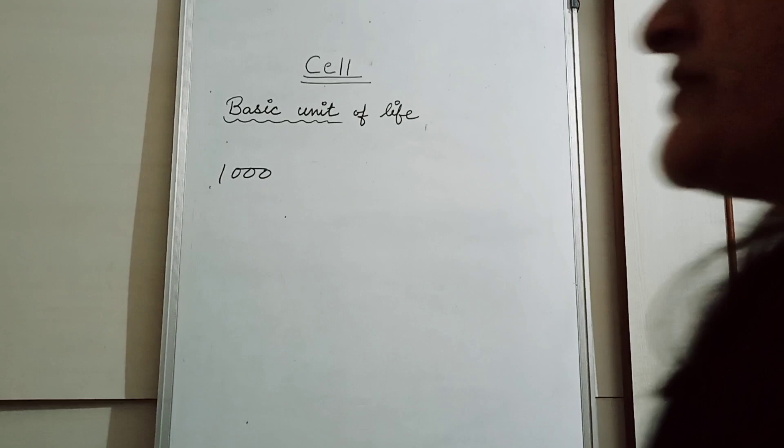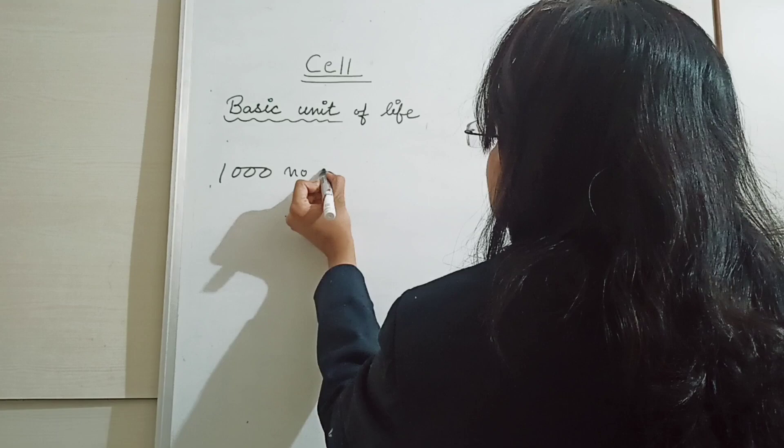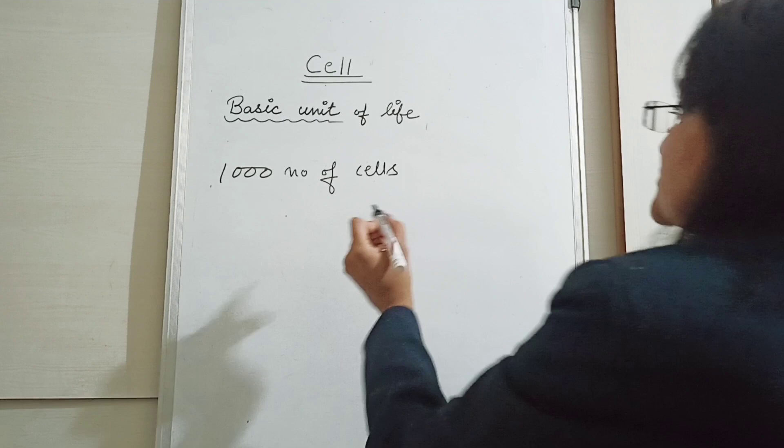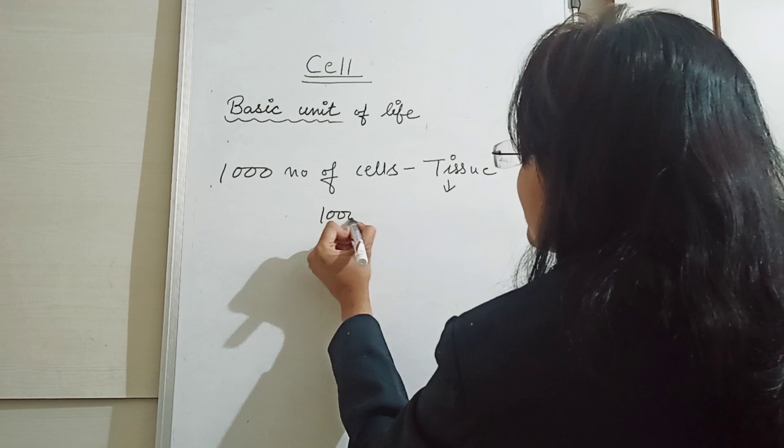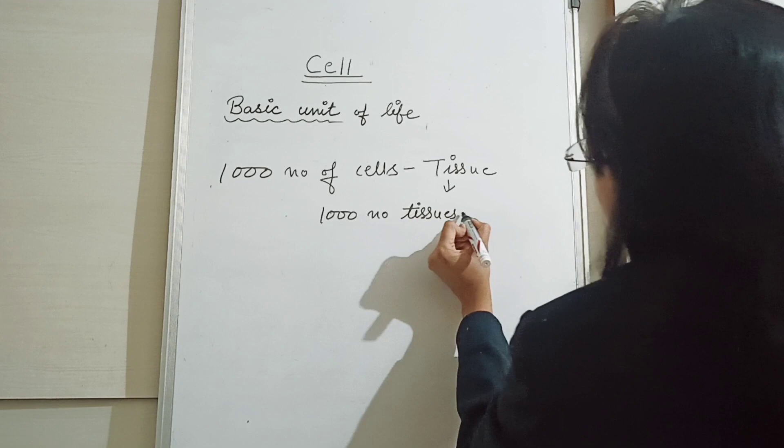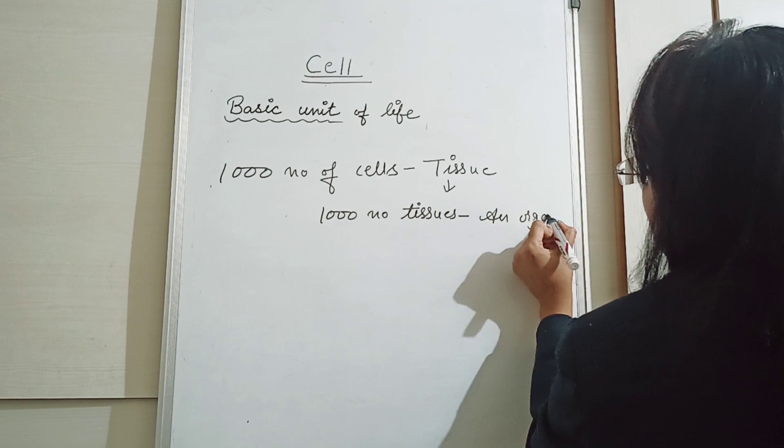Same as in our body also. Thousands of cells combine to form a special structure that is known as tissue. Then, thousands of tissues combine to form an organ.